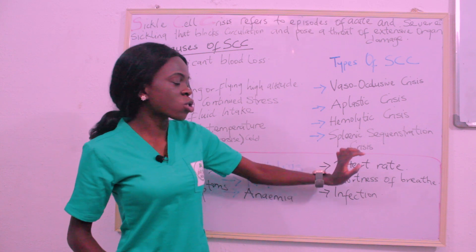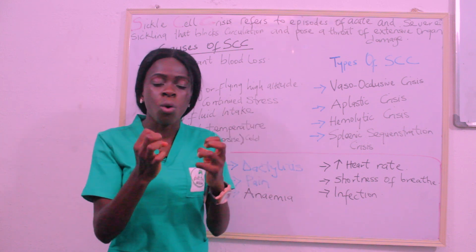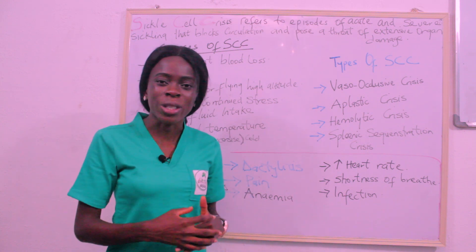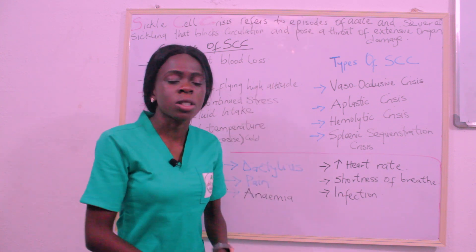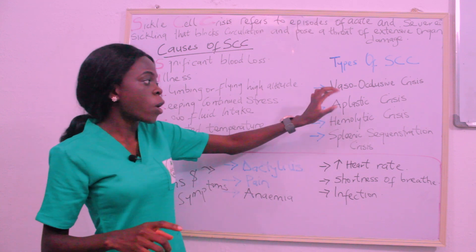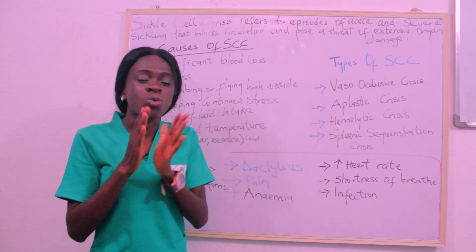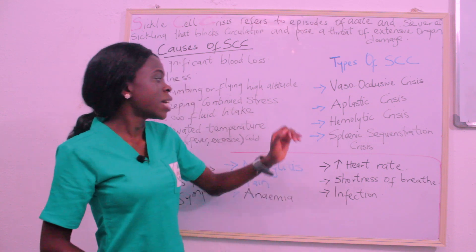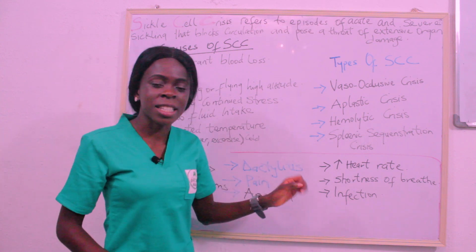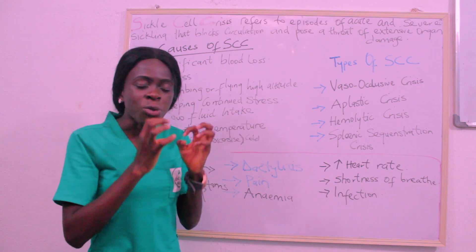The fourth type is splenic sequestration crisis, which occurs more in children. In splenic sequestration, there is pooling of red blood cells in the spleen — the spleen becomes overworked and develops pools of red blood cells. To summarize: vaso-occlusive crisis results from occlusion of blood vessels; aplastic crisis from a problem with the bone marrow; hemolytic crisis from destruction of red blood cells; and splenic sequestration crisis from the spleen being overworked and having pools of red blood cells.